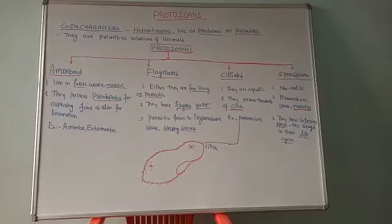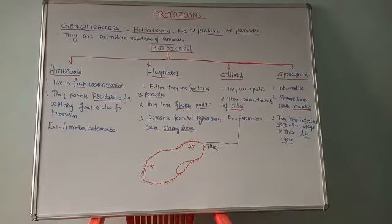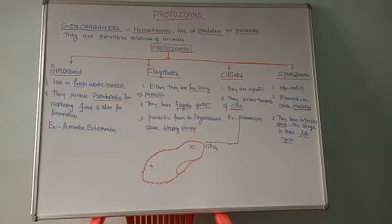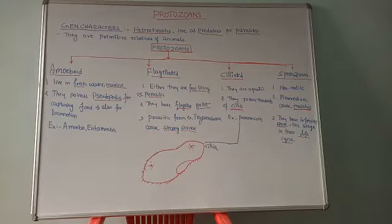Hello students, today we are proceeding towards the next topic of Kingdom Protista. In the previous lecture we discussed the general and salient features of euglenoids. Now we will discuss the last group of Kingdom Protista, that is protozoans.